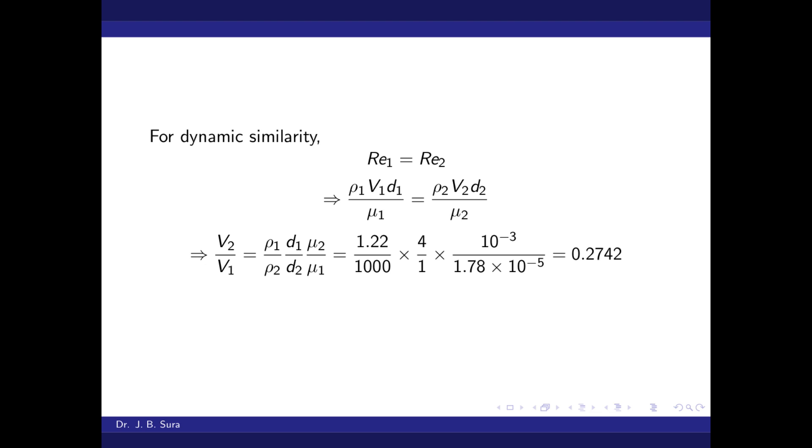So ρ₁V₁D₁/μ₁ = ρ₂V₂D₂/μ₂, where D is the diameter of the prototype or the model. If we simplify, we get V₂/V₁ = (ρ₁/ρ₂)(D₁/D₂)(μ₂/μ₁).